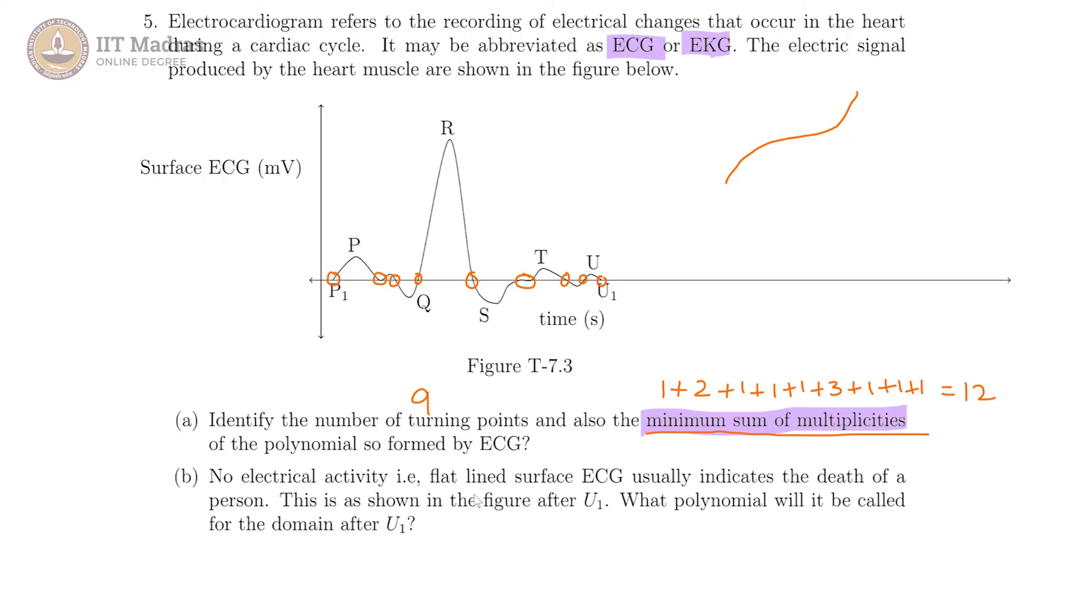No electric activity - that is, flat line surface ECG - usually indicates the death of a person. This is as shown in the figure after U1. So after U1, we presume that it is basically along the x-axis. What polynomial will it be called for the domain after U1?